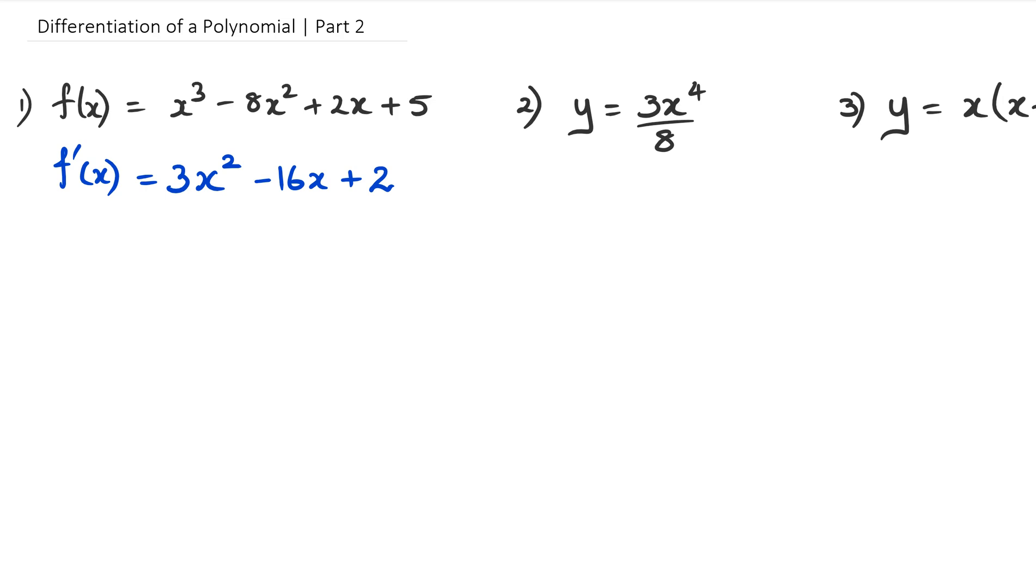Going to number 2. Number 2, what we have is we've got this 8 in the denominator. Now remember that this could be rewritten as this. Because it's 3 over 8, what I'm going to do is write it as 3 over 8 multiplied by x to the power of 4. Because remember, then 3 over 8 becomes that a value that we talk about.